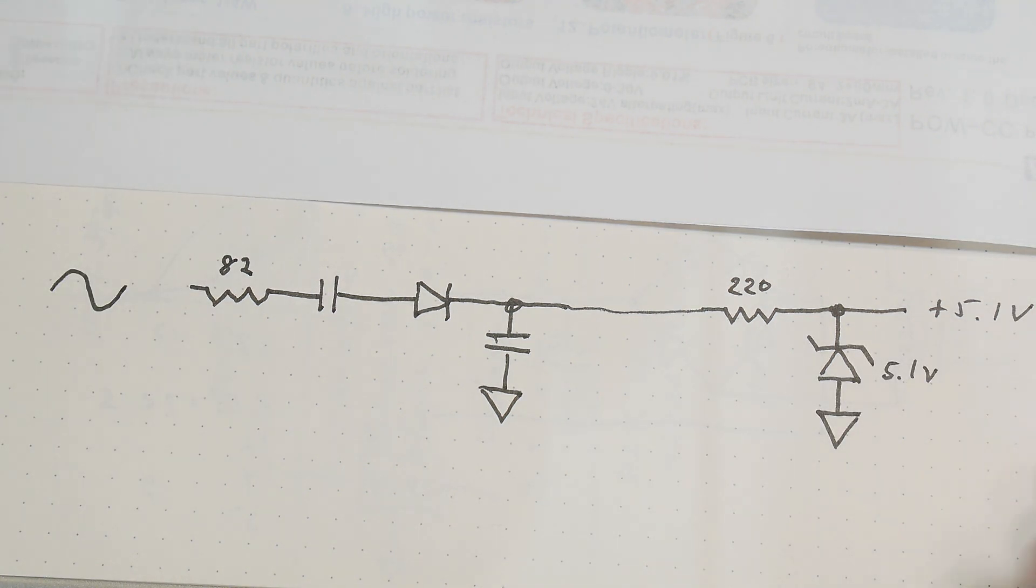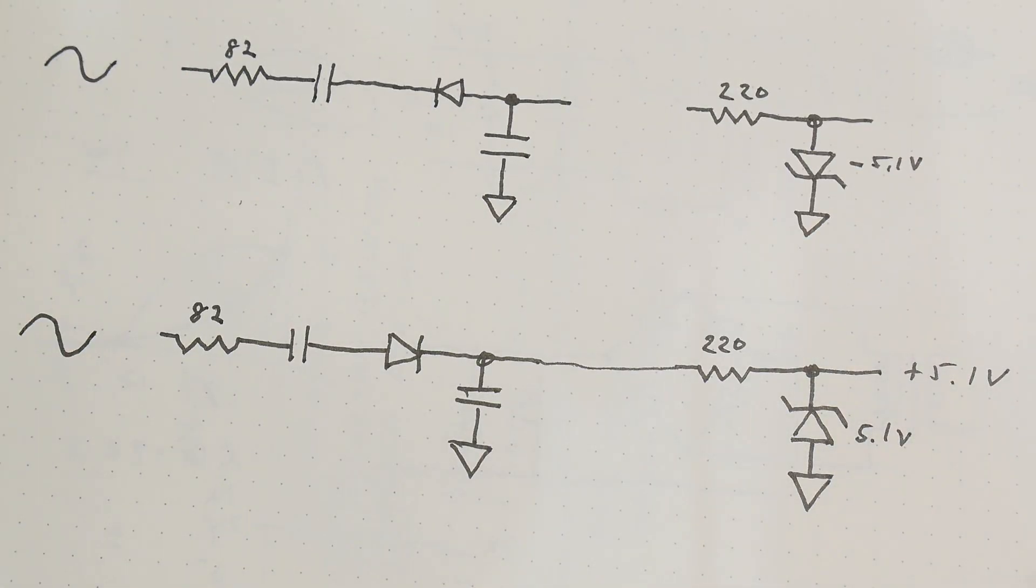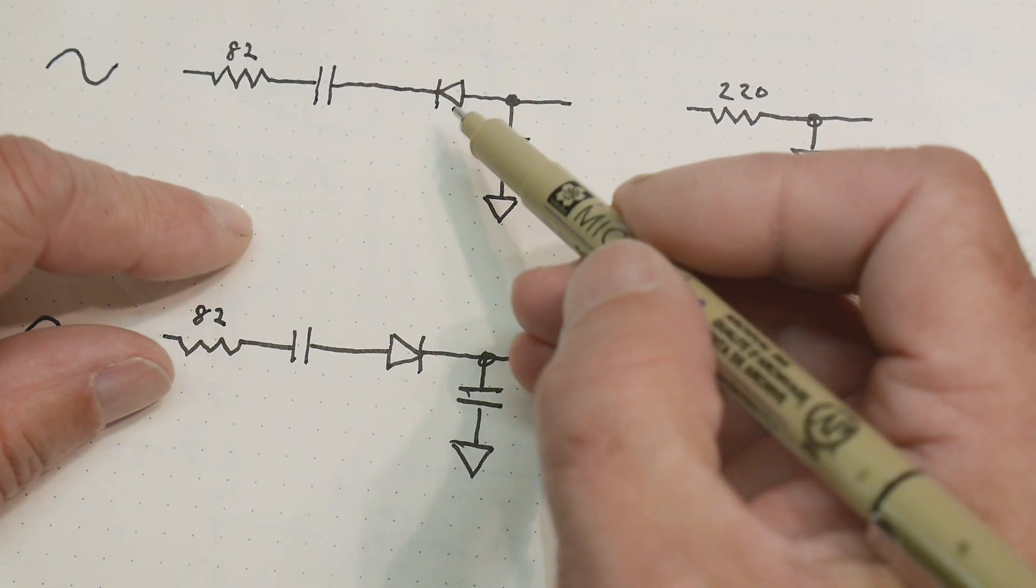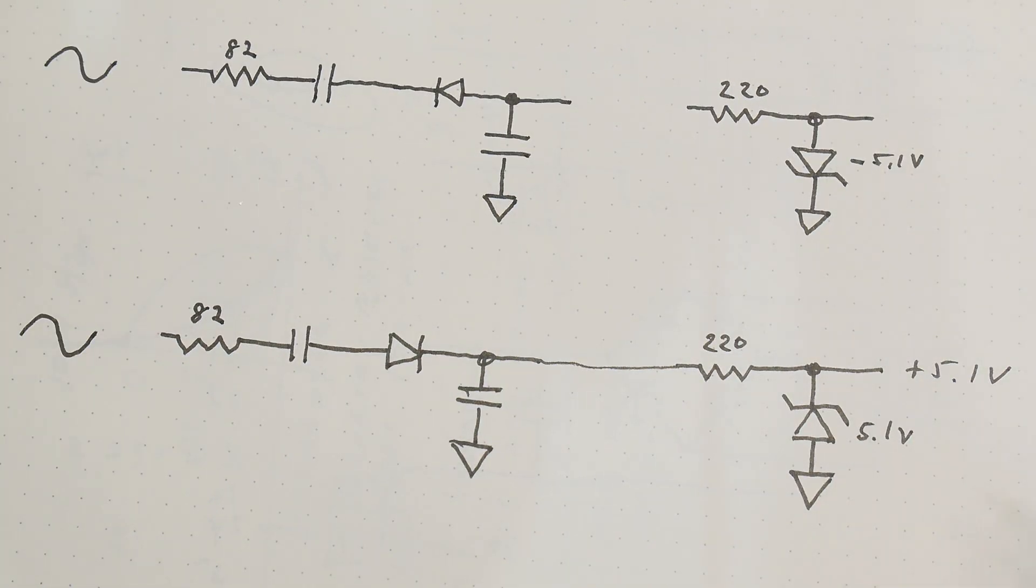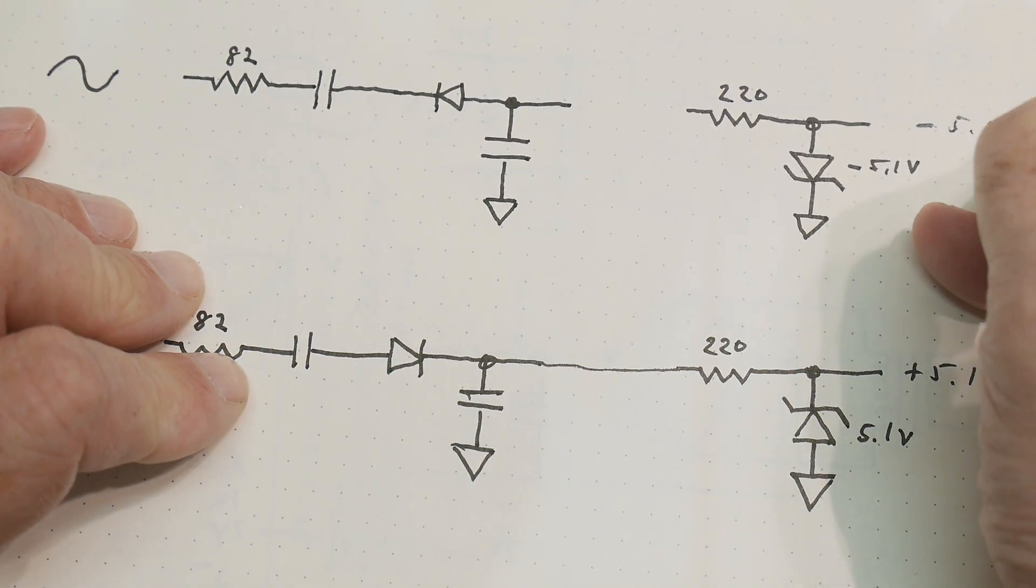What if you need to make negative 5 volts? Well, you do the exact same circuit. You just turn the diodes upside down. That's all you do. If you turn this diode upside down, and you turn that diode upside down, you're done. Now we have negative 5.1 volts.